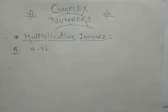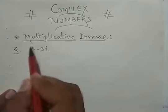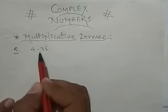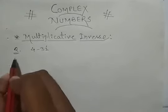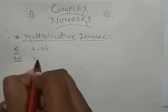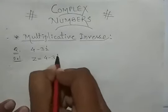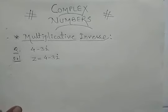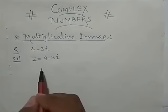Hello students, now we are going to discuss multiplicative inverse of complex numbers. If this complex number is given as 4 minus 3 iota, then we can write it as z is equal to 4 minus 3 iota. This is the complex representation of a number.